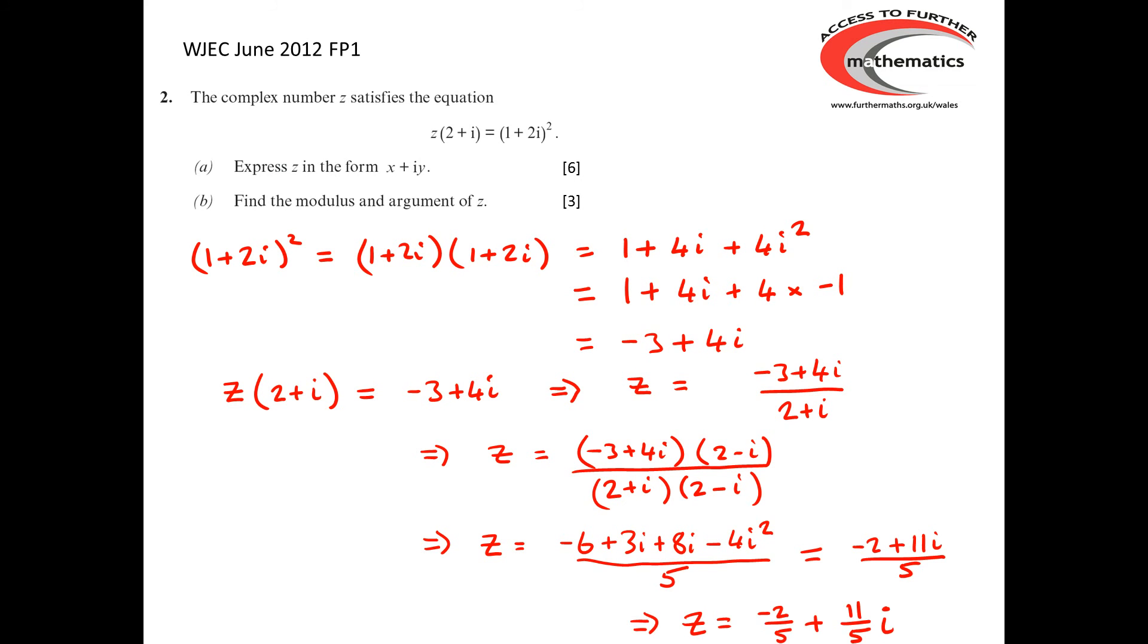So, we've got z is -2/5 + 11/5 i. So, that's the first part of the question done.